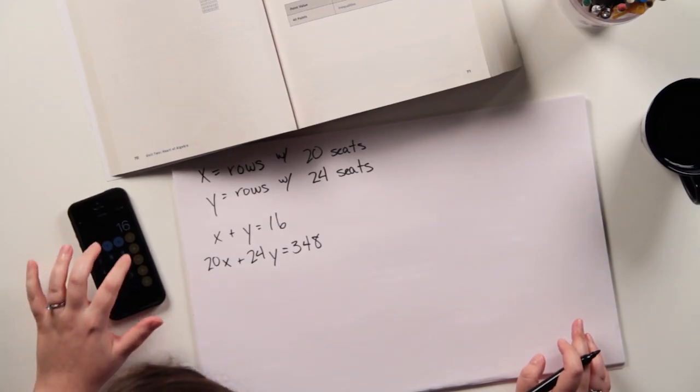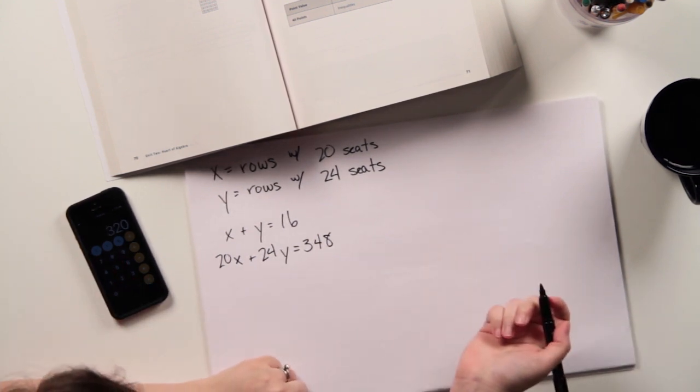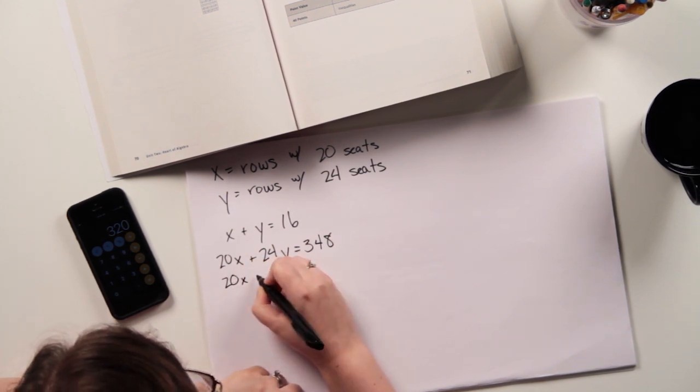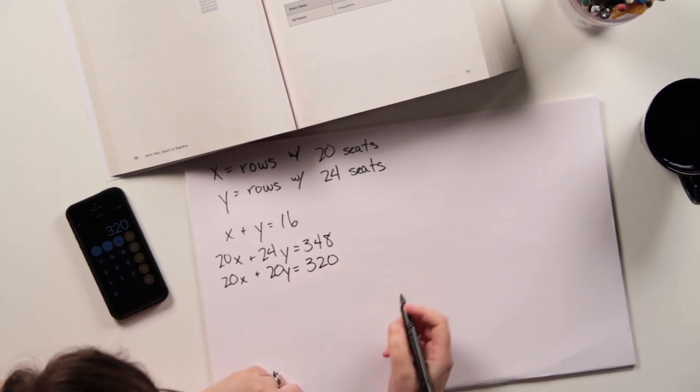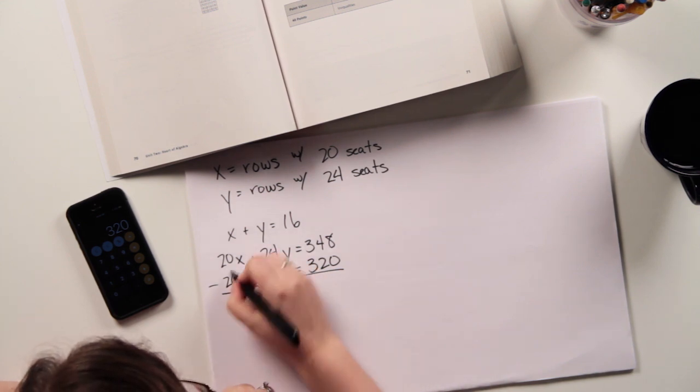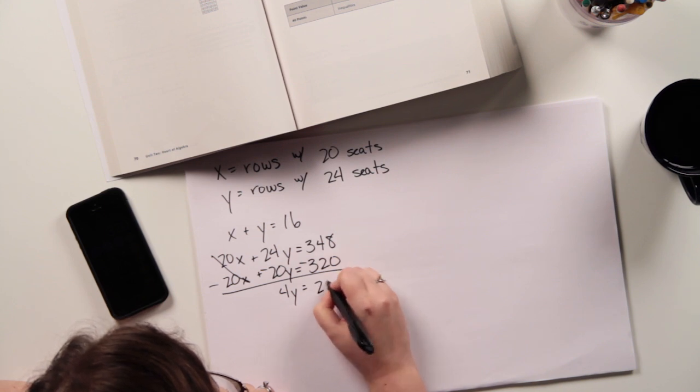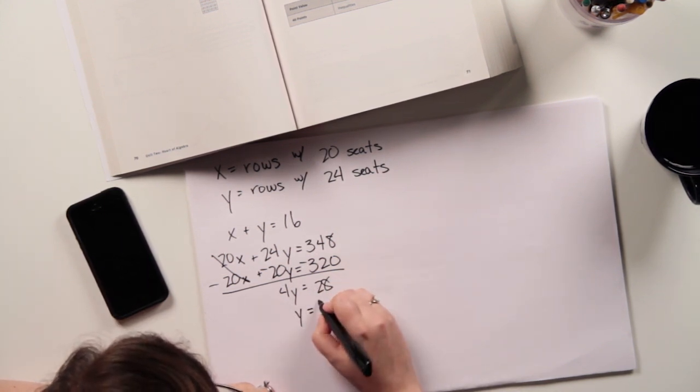16 times 20, 320. I should have been able to do that in my head. So then I've got 20x plus 20y equals 320. And I'm going to subtract these two equations, which means these guys are going to cancel out. That's going to become negative, that's going to become negative, so this is 4y. And subtract this, I'll get 28. So y equals 7.